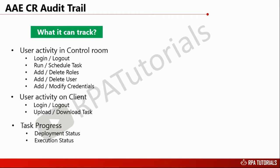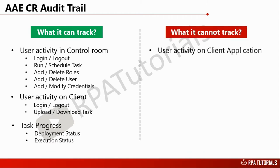Let us now look at the limitations of the audit trail feature of the control room. It does not track any user activity apart from the ones mentioned. That means any user activity on the Automation Anywhere client application does not get tracked. When a task executes on the client machine, it does not track any changes made by the task locally, like creating a file, saving an image, or opening a browser.